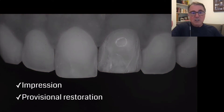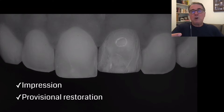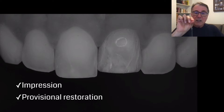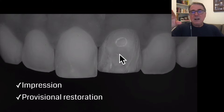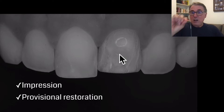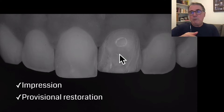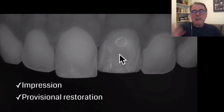Here is the image with the polarizing filter. Now I take the impression and do a provisional restoration. Usually for one tooth I do a direct freehand bonding composite — just a spot conditioning with a small amount of acid etch in the middle of the crown. I wash it, then use a regular bonding agent — not a universal or self-etching bonding agent — and do my restoration. It usually holds well until the next appointment.